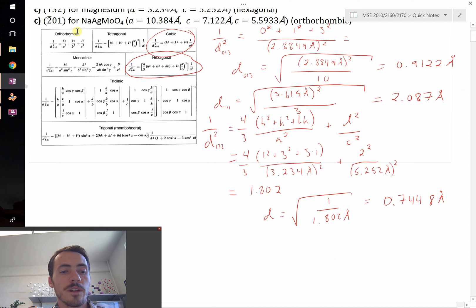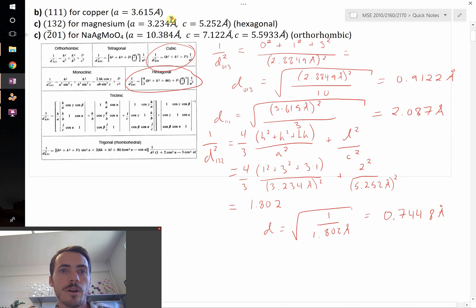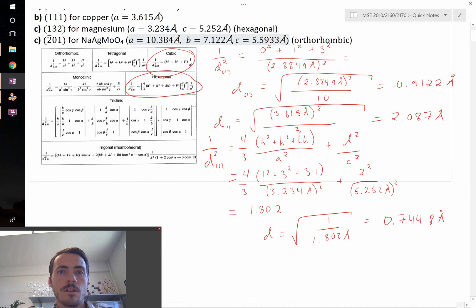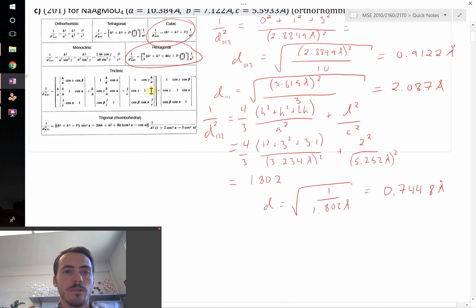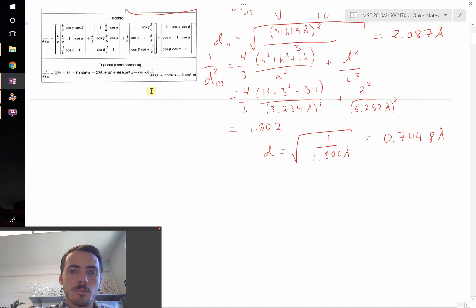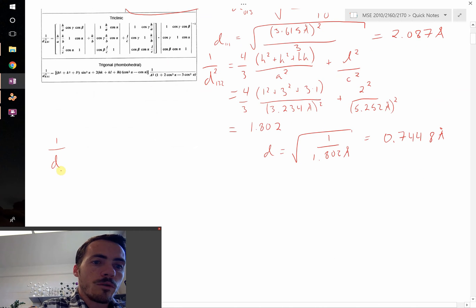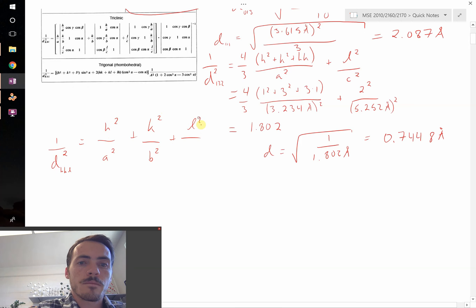This one is sodium silver molybdenum oxide, actually a distorted spinel. Spinel is cubic, but since this one's distorted, it's now orthorhombic. So it has A, B, and C lattice parameters that are all different from one another. With the 2, 0, 1, orthorhombic is going to be a relatively simple formula: 1 over D_HKL squared equals H squared over A squared plus K squared over B squared plus L squared over C squared.